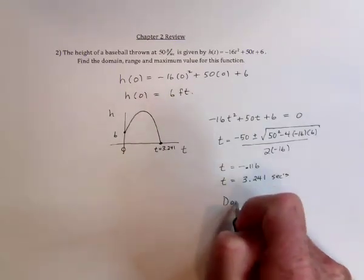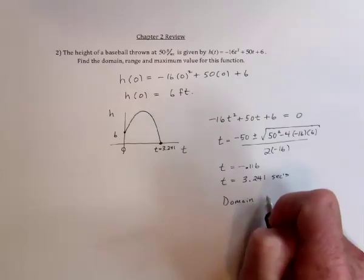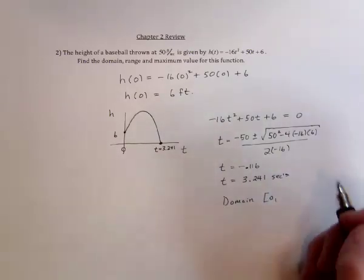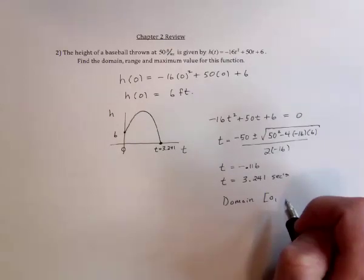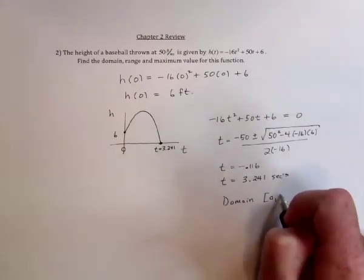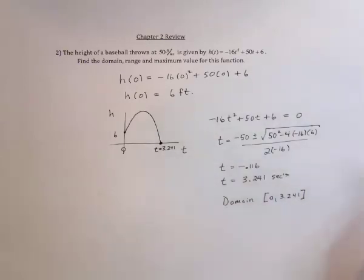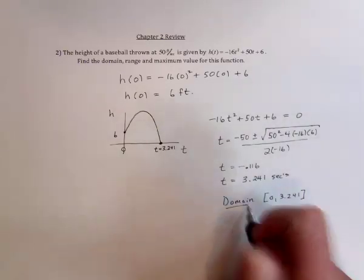So that's when it's going to land on the ground, 3.241 seconds. And so now we have the domain. The domain or the t values start from 0 and it can equal 0. That's the moment it's leaving the person's hand, the baseball. And then it goes to 3.241 when it hits the ground. So we've got part of it, the domain.